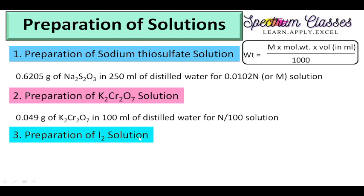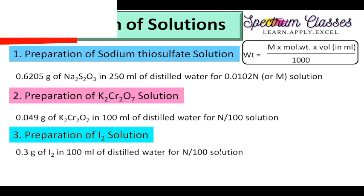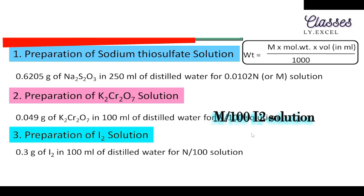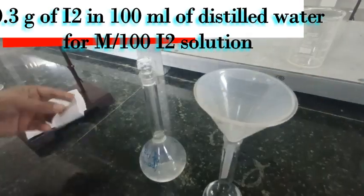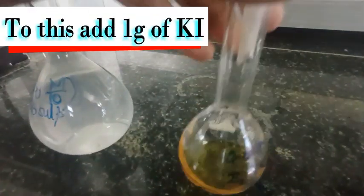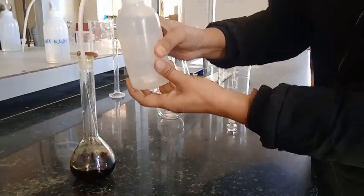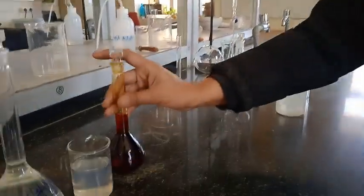The third step is preparation of iodine solution. To prepare iodine solution I need to calculate how much weight to take for 400 ml of distilled water to prepare an N/100 solution of iodine. Putting all the values into the formula, I get 0.3 grams of iodine. I have weighed 0.3 grams of iodine and attempted to dissolve it in distilled water, but as you can see it does not dissolve in simple distilled water. So I added 1 gram of potassium iodide to dissolve it — you can see it started dissolving. I added small amounts of water gradually so it dissolved completely; it takes 2-3 minutes and now the solution is ready.